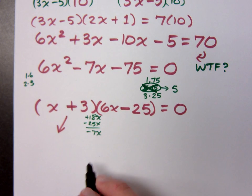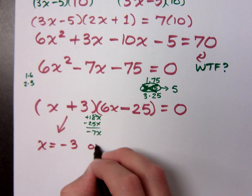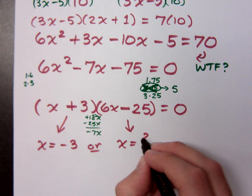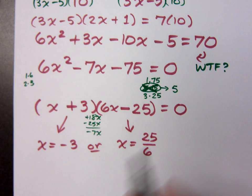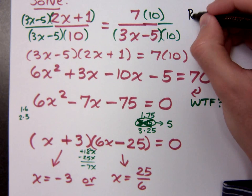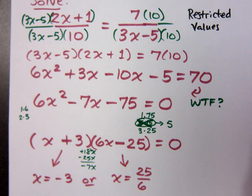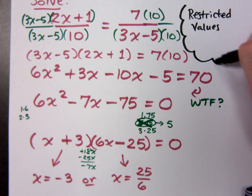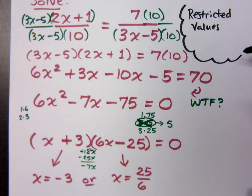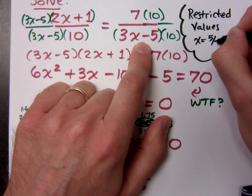What solution do I get from x plus 3? X equals negative 3. X equals negative 3 or X equals 25 over 6. Now before you go and box these, I do need to make sure that you are aware of something in this original problem. You must be aware of your restricted values. Remember, your restricted values are those values that would make your denominator equal to 0. Does 10 equal 0? No. But here, 5 thirds is a restricted value.